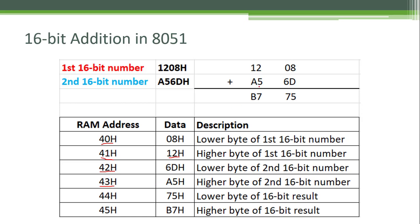When we add these two numbers, the logic we have to implement is that first we have to add the lower bytes of both numbers. Whatever result we get should be stored at 44h address location. The result of addition of 08h and 6Dh is 75h, so that number is stored at 44h. This 75h is nothing but the lower byte of the result.